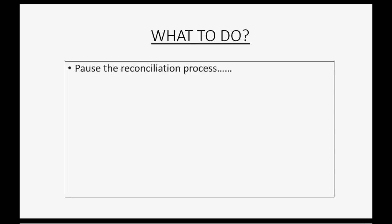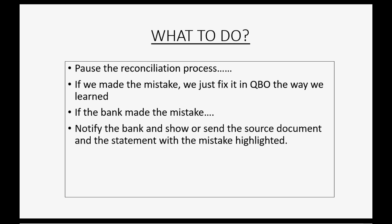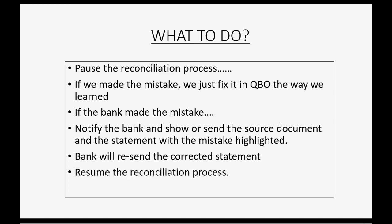Once you determine who made the mistake, you will do the following steps. First, you will have to pause the bank reconciliation process — don't worry, QuickBooks Online will remember everything that you put in the bank reconciliation window, and you can close it at any time and pick up on it later. If we made the mistake, we just go and fix it in our QuickBooks Online records. If the bank made a mistake, we will notify the bank and show or send the source document and the statement with the mistake highlighted. The bank will then resend the corrected statement to us, and once we have the corrected statement we can resume the bank reconciliation process. This is an overview of what you're about to see as we physically do bank reconciliation in QuickBooks Online.